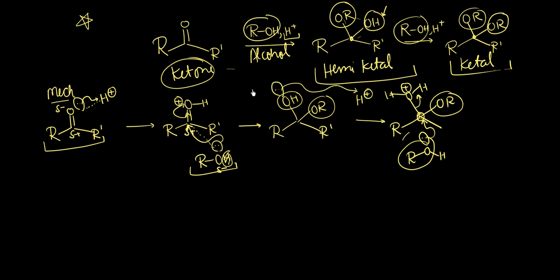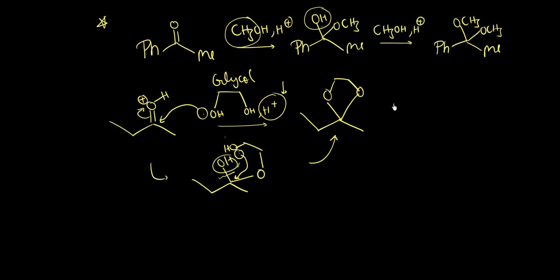So in this video you have learned acetal and hemiacetal—or you can say hemiketal and ketal—preparation from the ketones and alcohol reaction in the presence of acidic medium. The use of acidic medium is to increase the delta plus on the carbon so that alcohol can attack easily. So guys, I hope you like this video. Please do share and subscribe. Thank you.